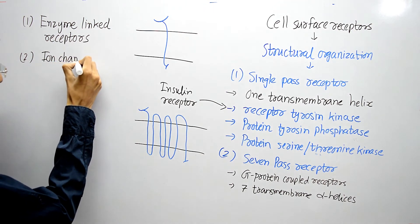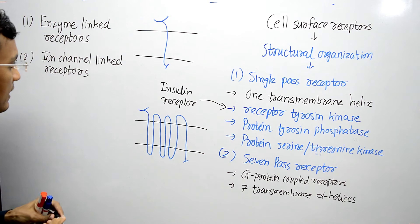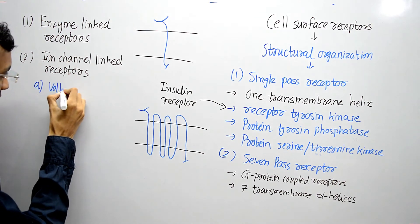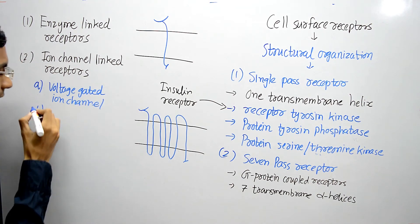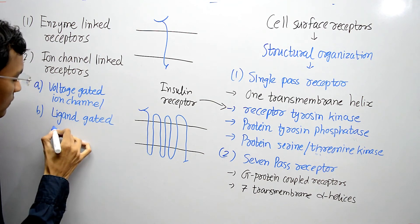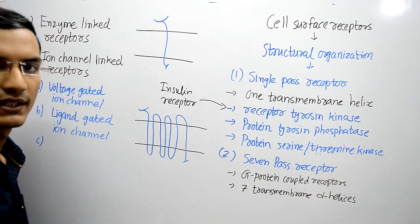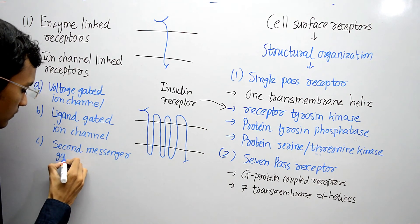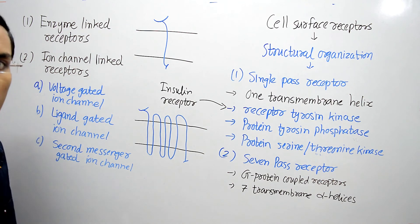The second type is ion-channel-linked receptors, which are of 3 different subtypes: first is voltage-gated ion channel, second is ligand-gated ion channel, and third is second messenger-gated ion channel. These are the 3 types of ion channels.